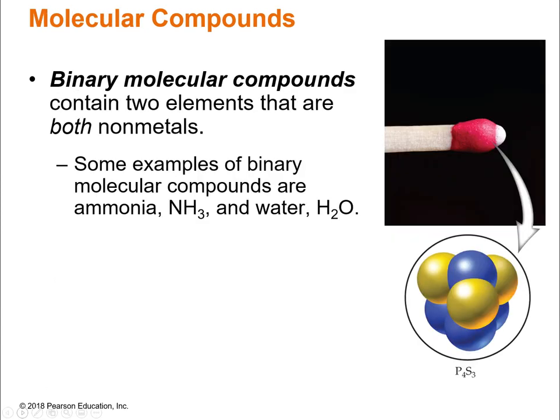Moving on to molecular compounds. Binary molecular compounds have two elements and they are both non-metals. Some examples would be ammonia, which is NH3, and water, H2O. You don't see any metals there. All of these are either hydrogen or something from the right-hand side of the periodic table, like oxygen or nitrogen.